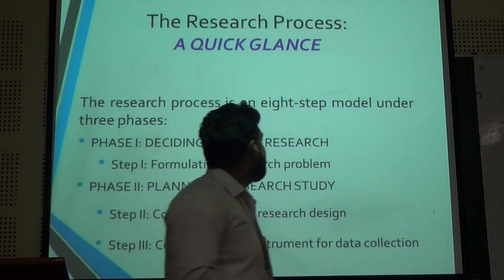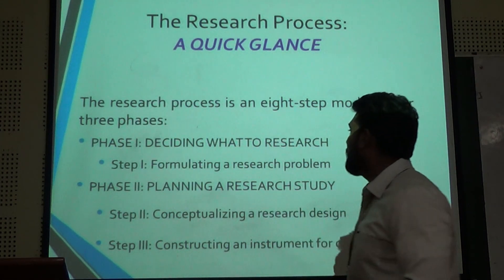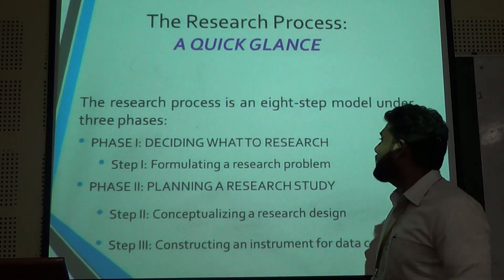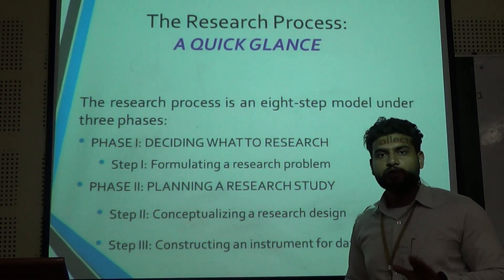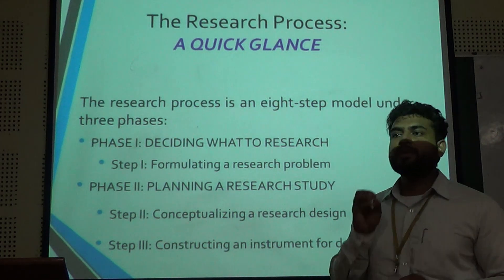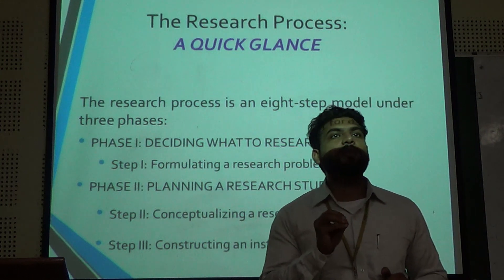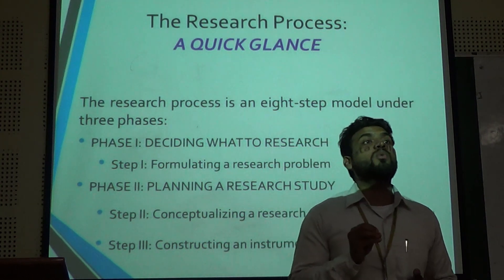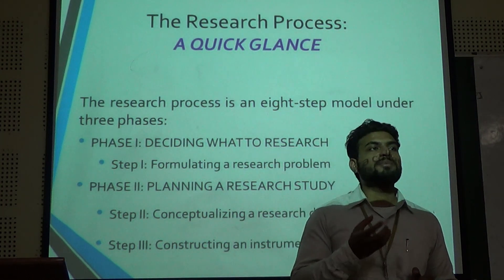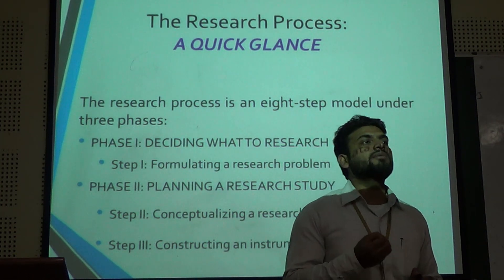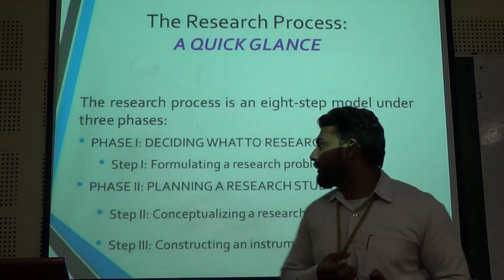The research process is an eight-step model. Under phase one — deciding what to research — if we have a common problem then we have to find out what to investigate. If we have some agenda, then we can solve that particular problem.